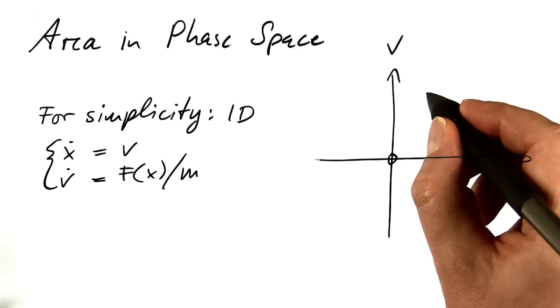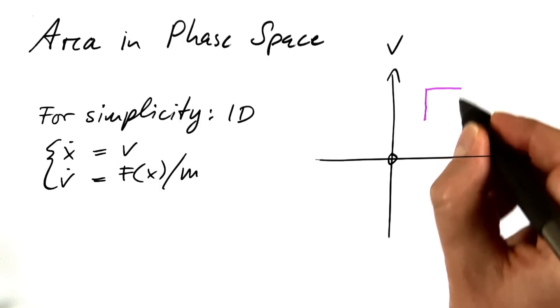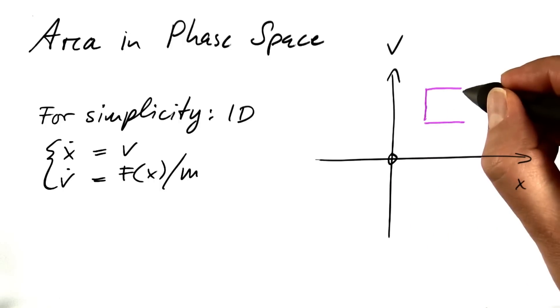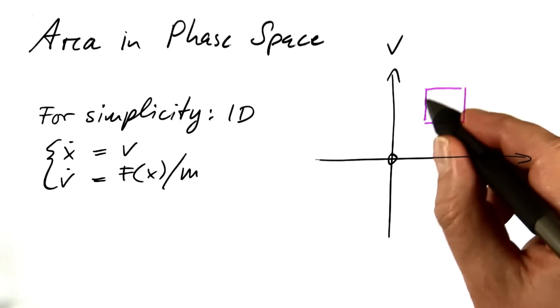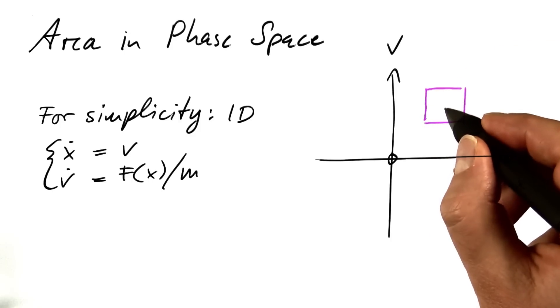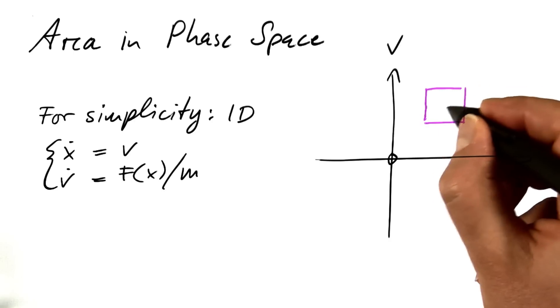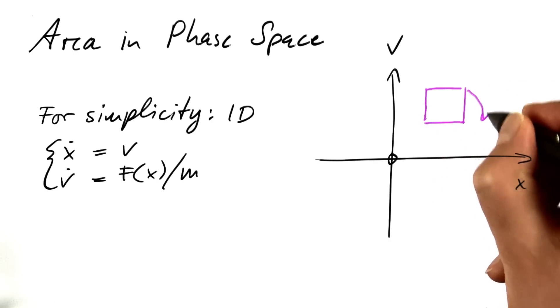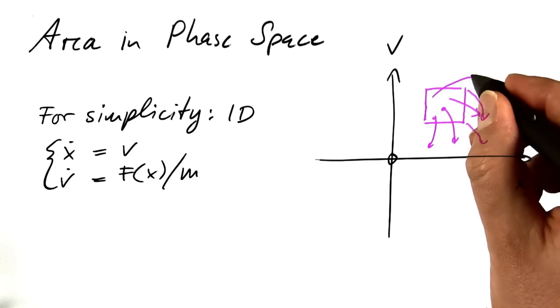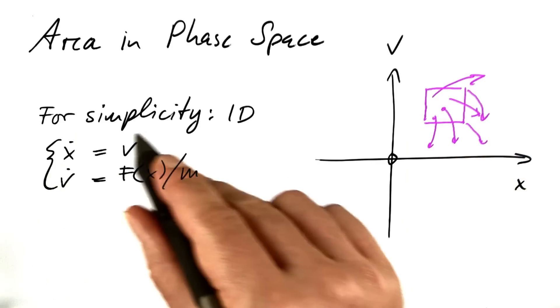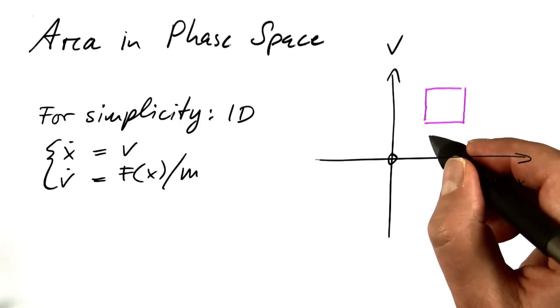The trick now is to look at infinitely many initial conditions at the same time, a complete area in phase space. This is what we're talking about. Let's look at all of these initial conditions. What's going to happen with them? Where is the evolution going? Where is the differential equation taking us? In this way, we see an evolution of area in phase space.